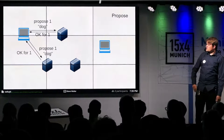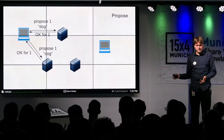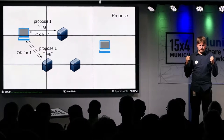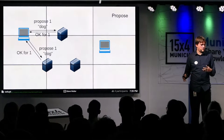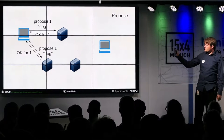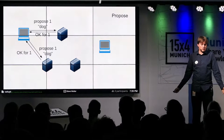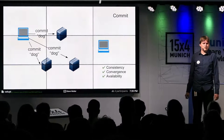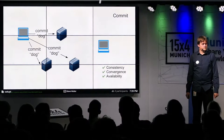In phase two, the leader sends proposed messages to all servers that accepted its preparation, proposing the value 'dog.' Both servers haven't received any contradicting messages in the meantime, so they both say okay. The leader gets two okay messages — two is the majority of three — so it commits the value 'dog' to all the servers, and 'dog' is accepted.